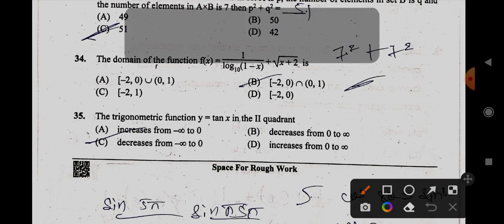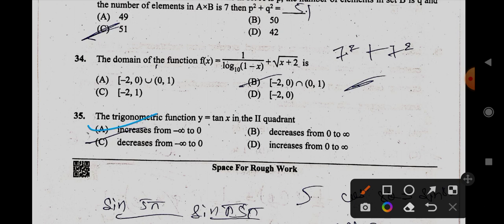34th, it is A. Sorry, 34th is not B. 34th is A. Not B, it is A. Not intersection, it is union. 34th is union. And 35th is also A, increases minus infinity, this.